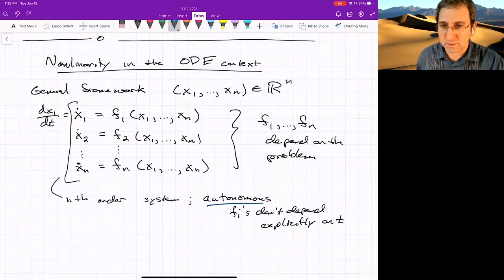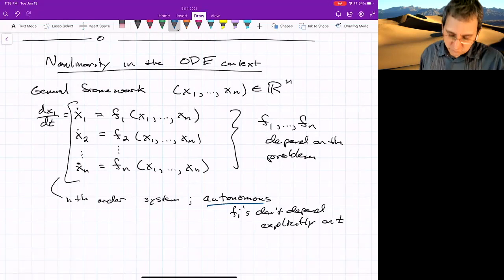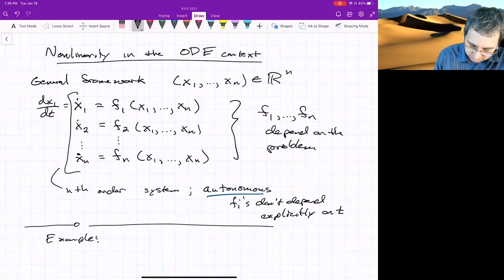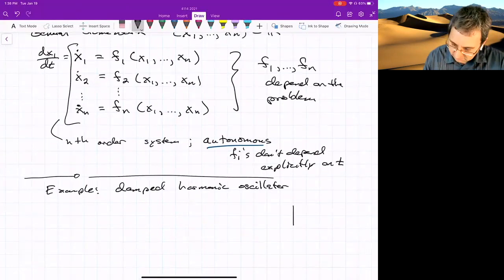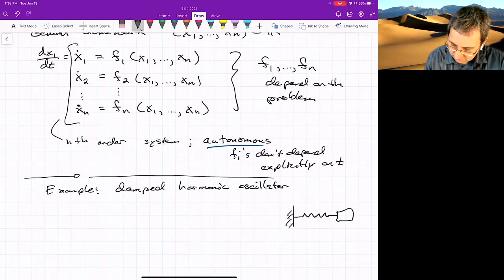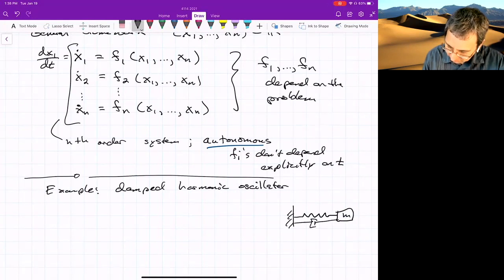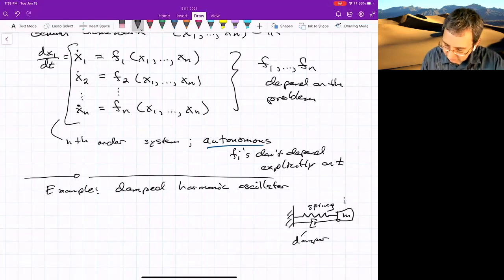It's not going to be a big limitation, I don't think. A system that could be written in this form, there's this example we sometimes talk about called the damped harmonic oscillator. And lots of behaviors described by this. Often what's drawn is like a mass that's also got a damper attached to it. So this is a damper. And then this is a spring.